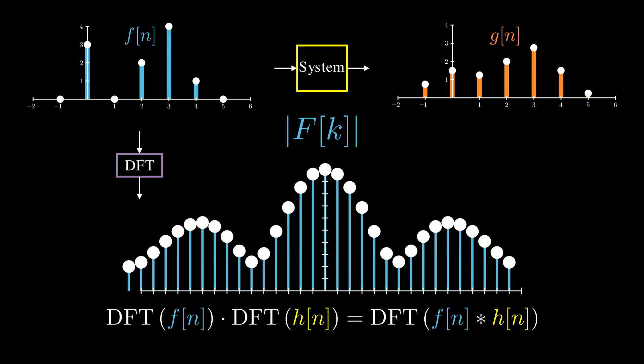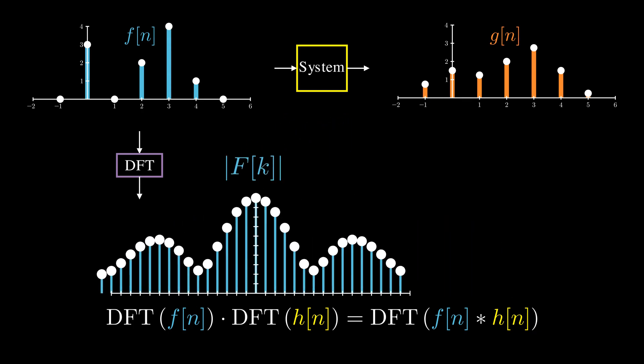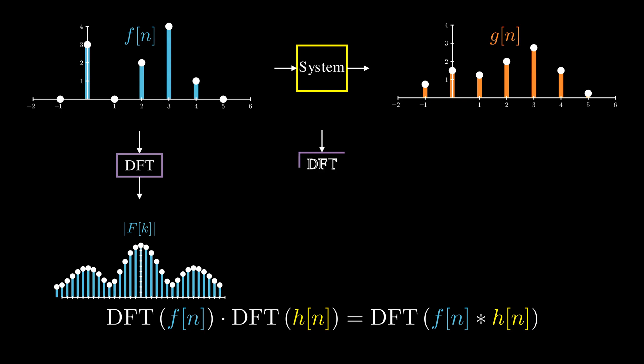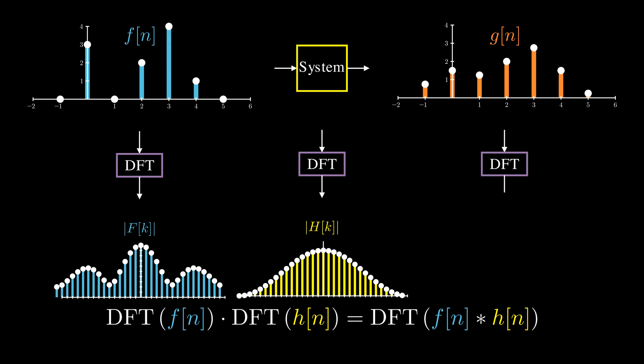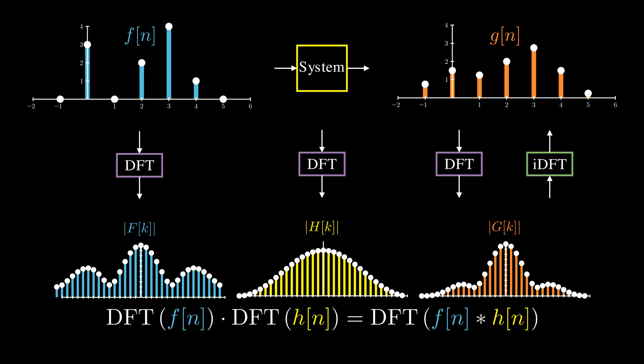Indexes closer to the center represent lower frequencies, while those further out represent higher frequencies. Next, we compute the DFT of the impulse response h. This reveals a bell-shaped curve where the value gradually decreases for high frequencies. Here is the DFT of the output signal g. Thanks to the convolution theorem, we can see that the blur filter suppresses the high-frequency components in the input signal f. And by applying the inverse DFT, we can reconstruct the blur signal g.